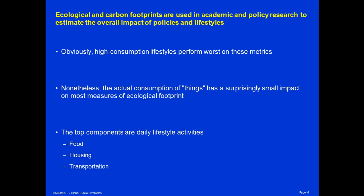Ecological footprints and carbon footprints are used in academic research and policy research to estimate the overall impact of policy and lifestyle choices. Obviously, high consumption lifestyles perform worse than low consumption lifestyles on these metrics, but surprisingly, the amount of things a person consumes isn't really the biggest lever for determining the ecological footprint. Food, housing, and transportation tend to matter much more than the sorts of things you purchase, because food, housing, and transportation are things that we use every day, day in and day out, all the time.